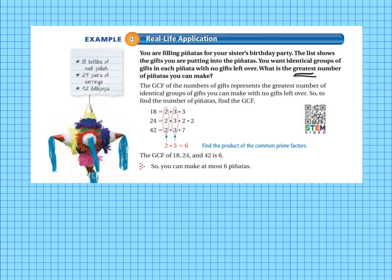So you do a factor tree for 18. You come up with the prime factorization of 2 times 3 times 3. And same thing for 24, 2 times 3 times 2 times 2. And 42 is 2 times 3 times 7. And then we circle the common prime factors. 2 times 2 times, I'm sorry, 2 and 2 and 2. So there's a 2 in all of them. And there's a 3 in all of them. None of the rest of the numbers are in all 3 prime factorizations. So we multiply 2 times 3 and we get 6. So the greatest common factor of our 3 numbers is 6. So we can make at most 6 pinatas.